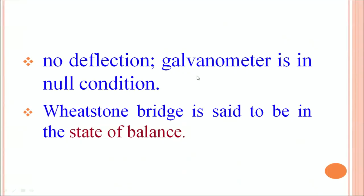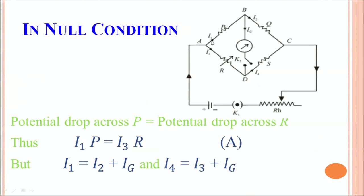When the potential at B is equal to the potential at D, no current will flow through that part of the circuit and the galvanometer will show no deflection. When there is no deflection, we say we have achieved the null condition of the galvanometer and the Wheatstone bridge is in a state of balance. In null condition, VB equals VD, and this happens when the potential drop across P equals the potential drop across R — that is, I1·P = I3·R.